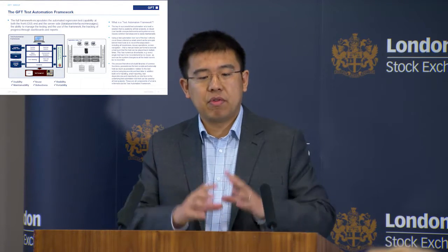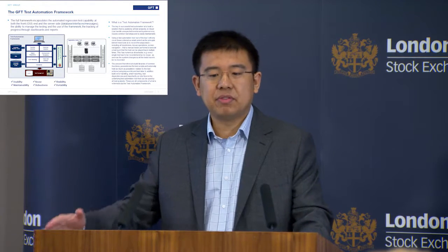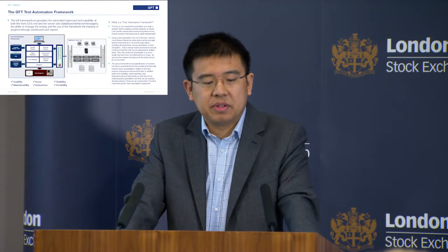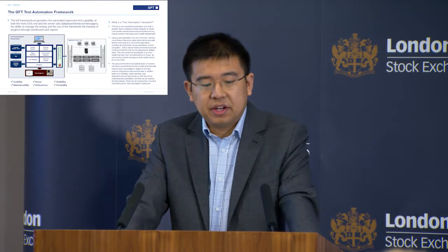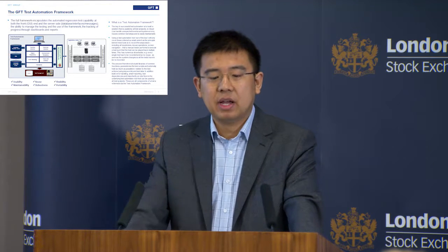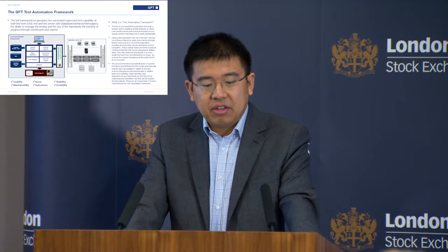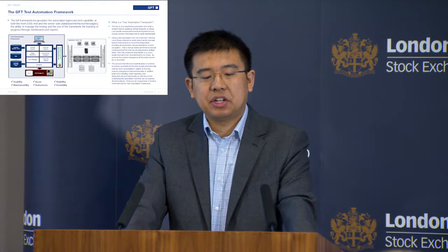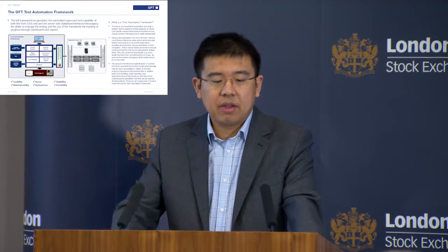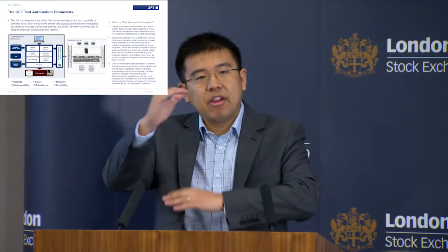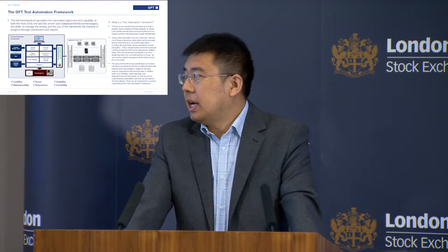A framework is created with the right tool selection, then sprint after sprint the automation framework is expanded, gradually maintained and updated. Eventually it becomes the whole testing suite utilized for functional and non-functional testing. Key qualities we emphasize are usability, reusability — so it can be replicated by different teams in different environments, not just the IT team but also production support — and maintainability, so all layers can be easily expanded and scaled.